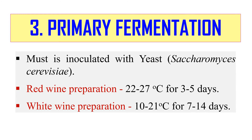The next step is primary fermentation. The must, or juice obtained after crushing, is inoculated with 2 to 10% yeast inoculum of Saccharomyces cerevisiae, and fermentation is carried out under optimum temperature and conditions. For red wine, the temperature should be 22–27°C and fermentation generally takes 3–5 days. For white wine, the temperature should be 10–21°C and fermentation generally takes 7–14 days. During fermentation, the content is mixed twice a day by punching the floating skin for proper aeration. Fermentation allows rapid multiplication of yeast, which converts sugar into ethanol.